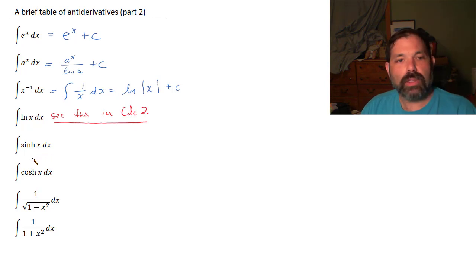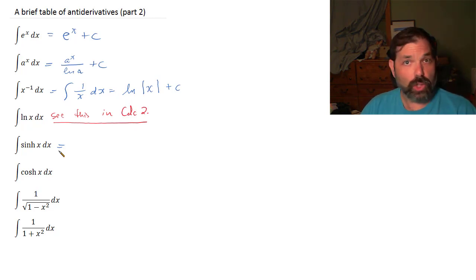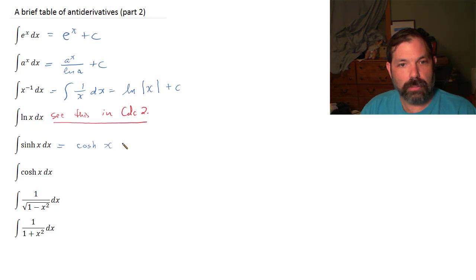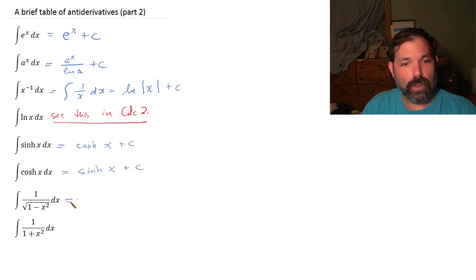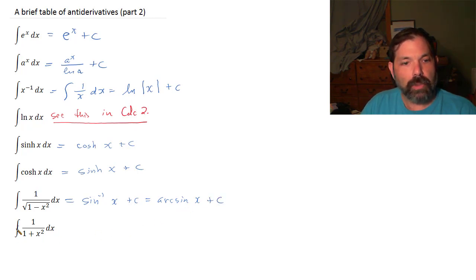The hyperbolic sine and cosine behave nicely — the derivative of hyperbolic sine is hyperbolic cosine and vice versa, with no negatives to worry about. So the integral of sinh x is cosh x plus c, and the integral of cosh x is sinh x plus c. The integral of 1 over the square root of 1 minus x squared dx is the inverse sine of x plus c, also written as arcsin of x plus c. The integral of 1 over 1 plus x squared dx is the inverse tangent, or arctan of x plus c.